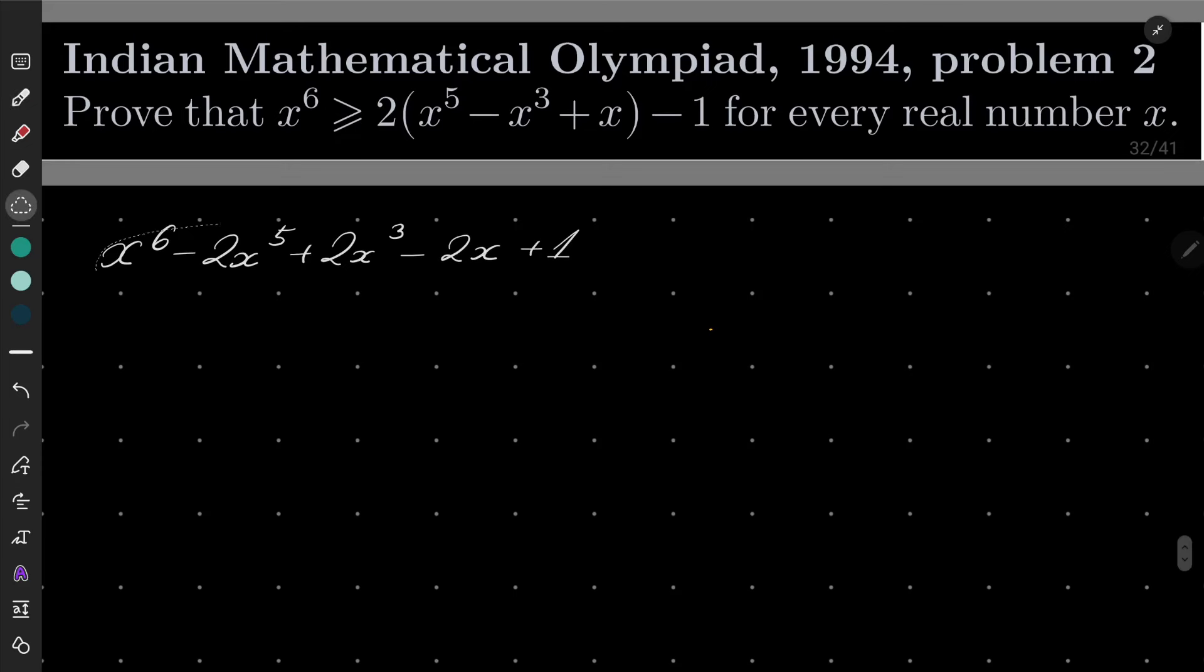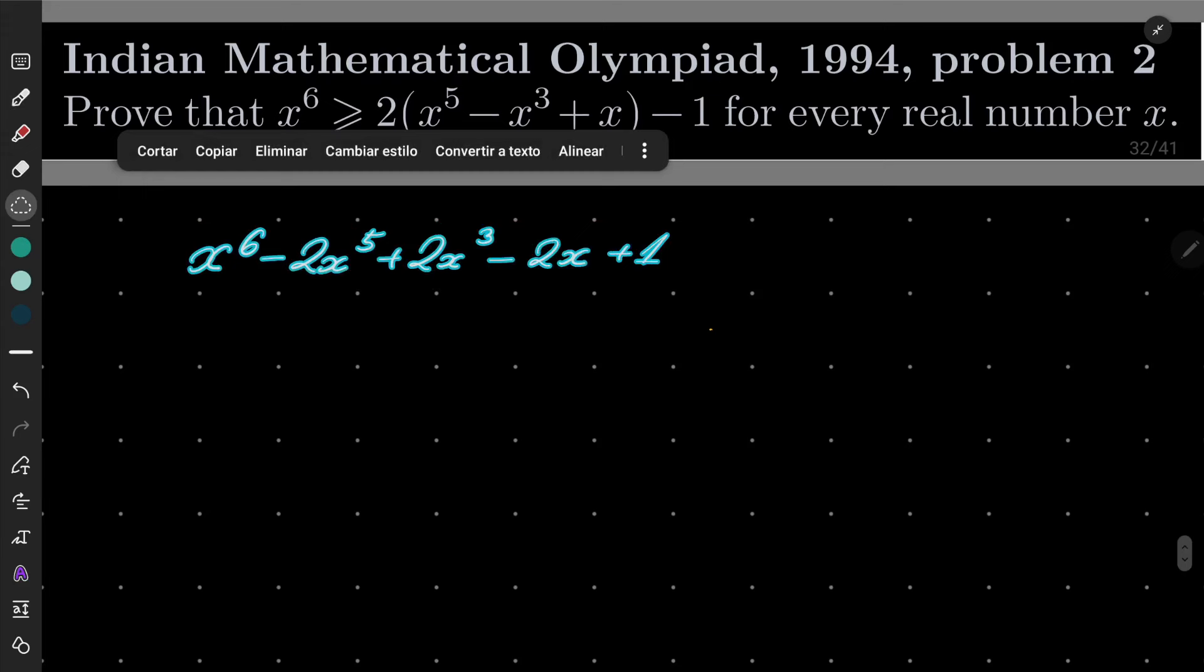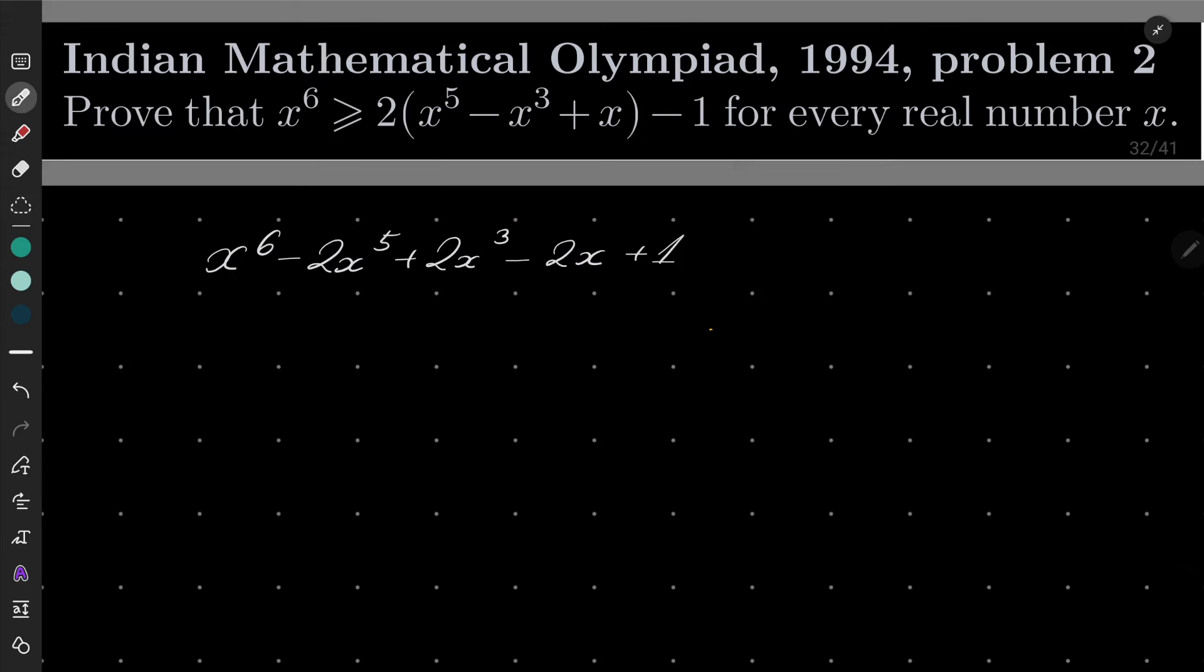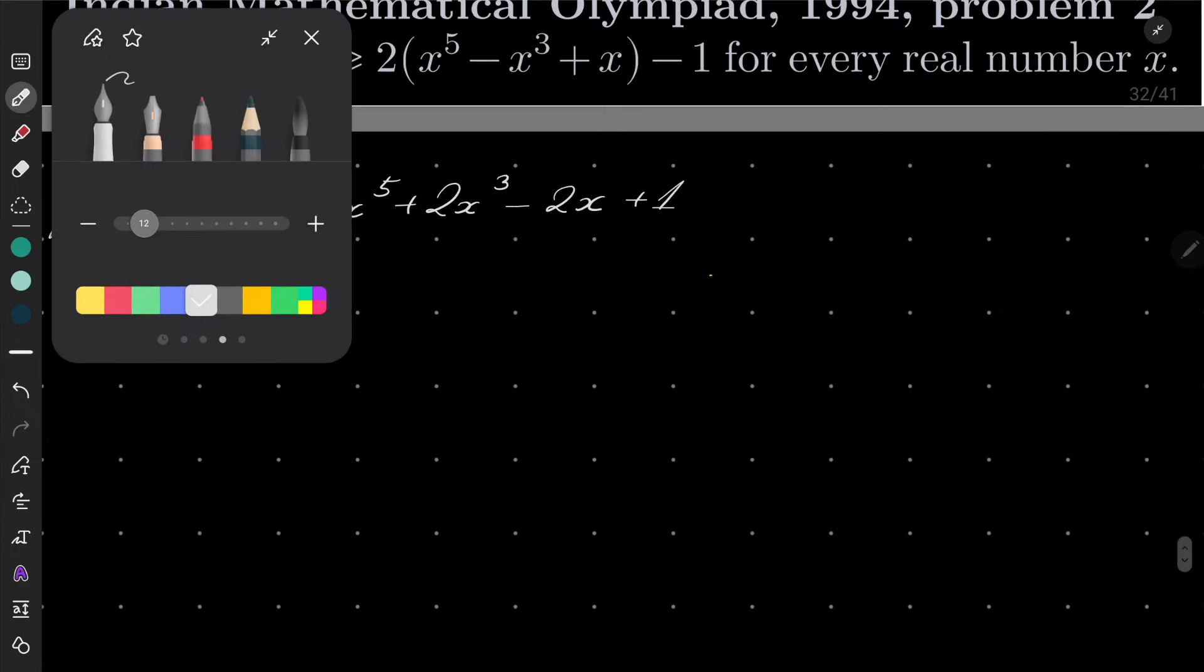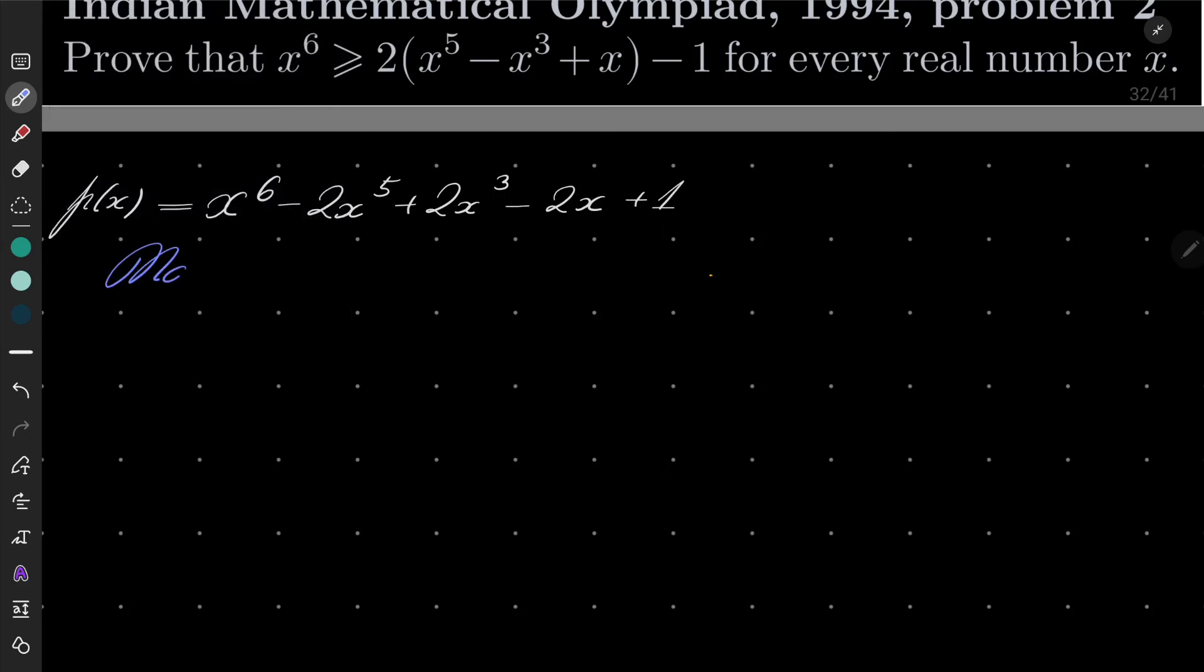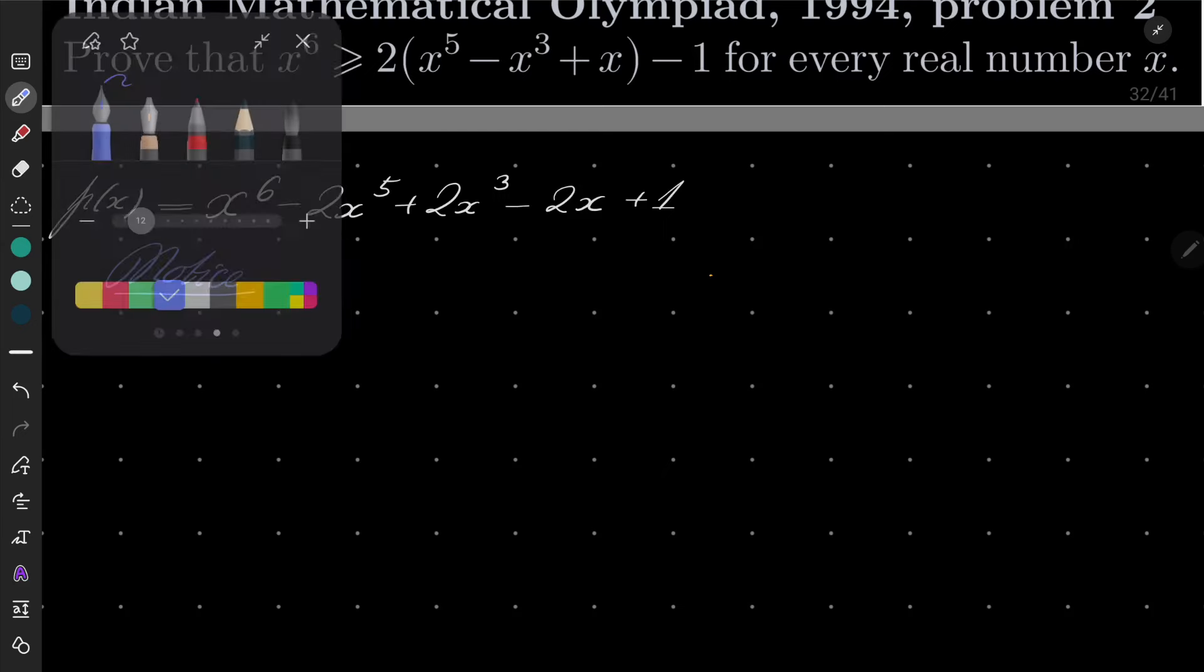Let's consider this function, this polynomial of degree 6. So let's call it p of x. Notice the following.